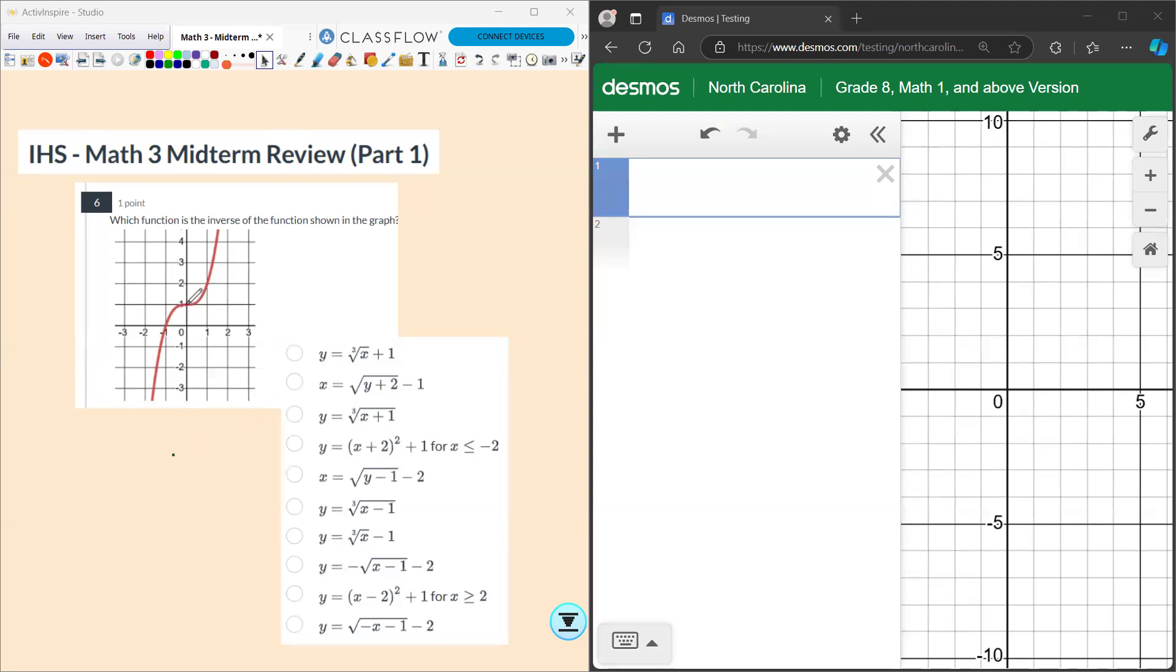So what we need to do is figure out some key points. This point would be (0,1), and what I want to do is reverse that and I want a point that goes through (1,0).